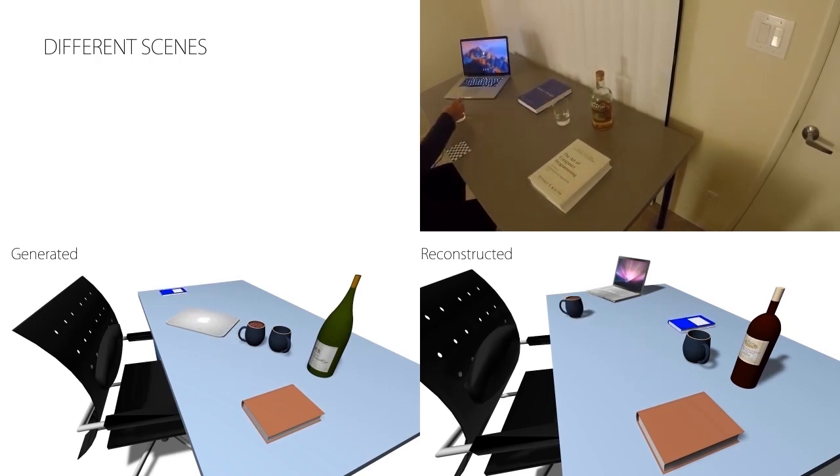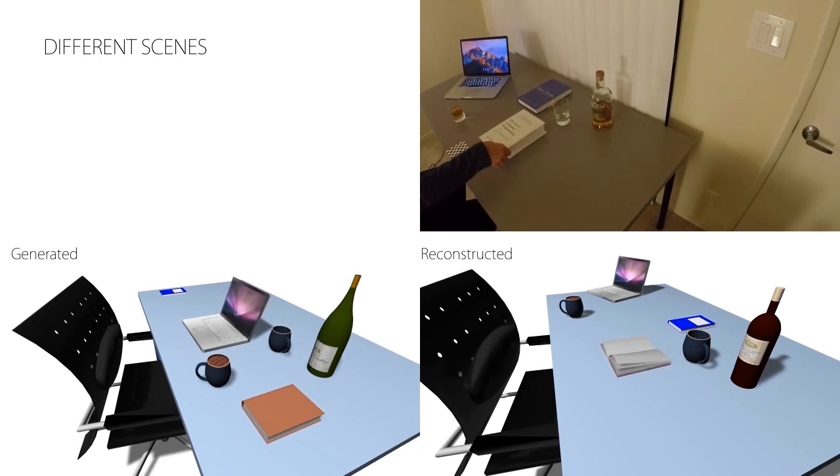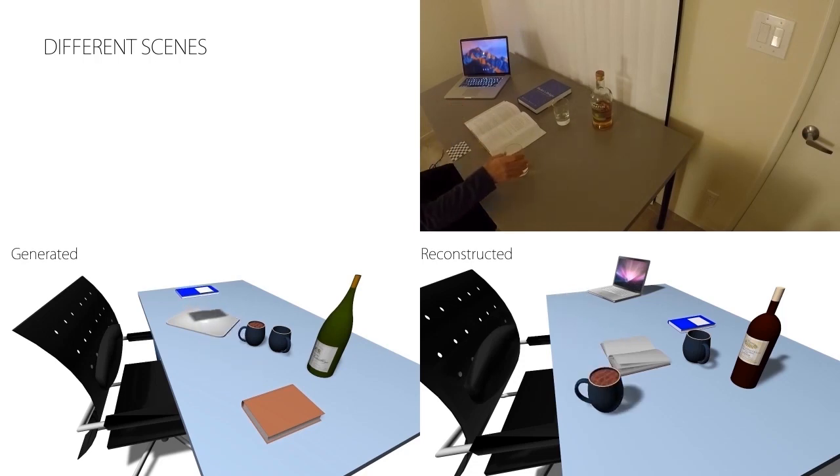By capturing videos of humans interacting with real-world objects, we can learn and generate plausible interaction sequences. Here we show the video capture, the reconstructed sequence, and a new generated set of interactions.